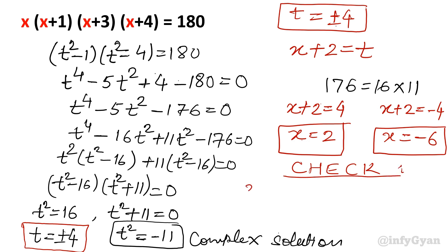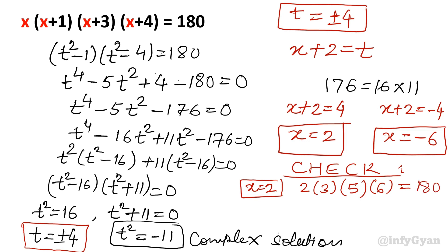Let's check. For x equal to 2: x(x+1)(x+3)(x+4) = 2×3×5×6. 2 times 3 is 6, 6 times 5 is 30, 30 times 6 is 180. Yes, it is true. Now for x equal to −6: −6 times (−6+1) = −5, times (−6+3) = −3, times (−6+4) = −2. Minus times minus times minus times minus gives a positive result.